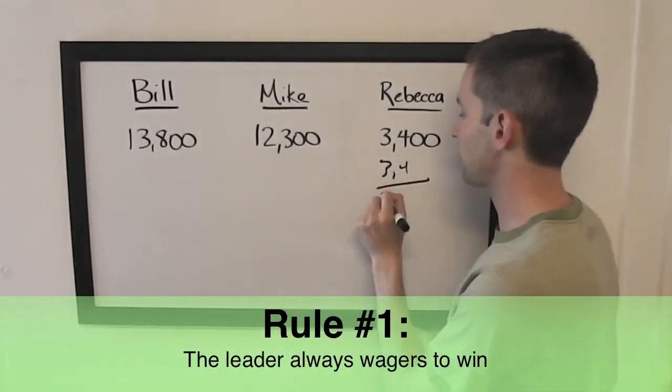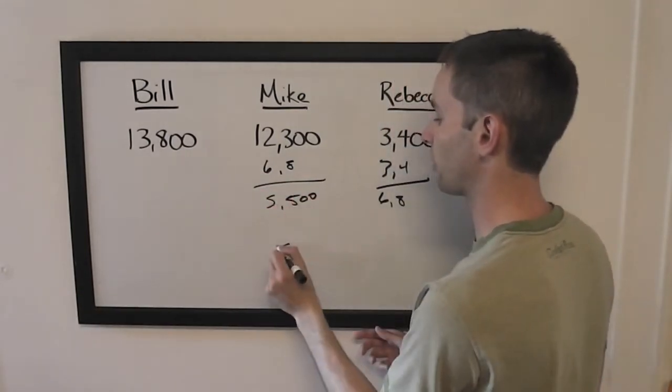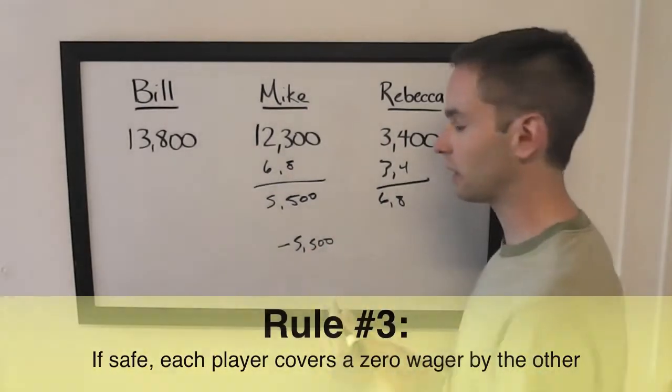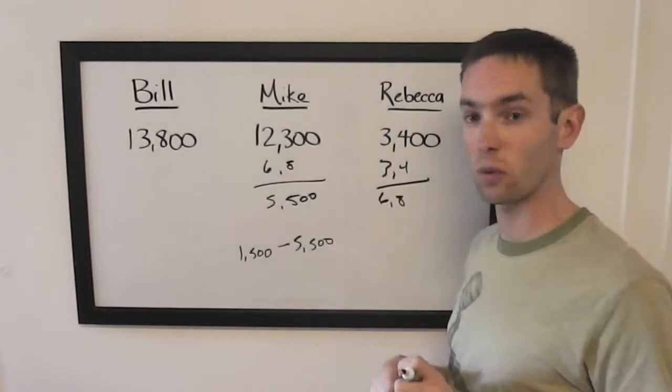If Rebecca doubles up, she's going to have 6,800, so to stay above her, Mike can wager up to 5,500. Now the difference between Bill and Mike is 1,500, so anything in this range would be considered what we'd call a strategic wager.